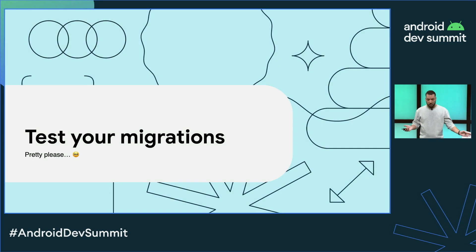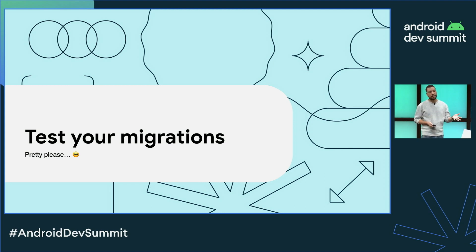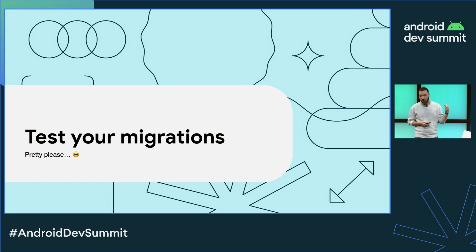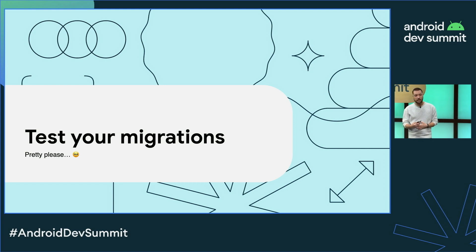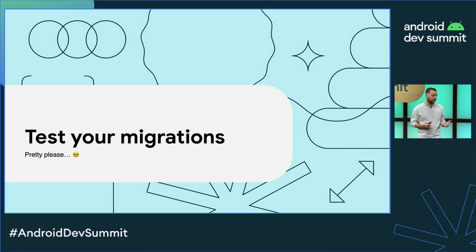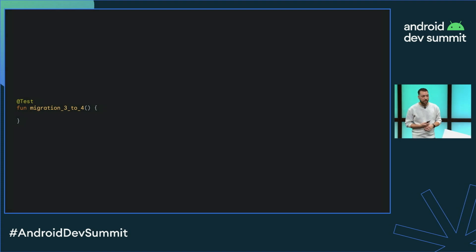Migration bugs are not very common, which means it's an area often overlooked during testing. But it's really important to test your migrations because they can lead to some really bad bugs — especially crash loops where the app is trying to update the database and failing, and the user ends up reinstalling the app and losing their data. The good news is that Room does offer APIs for testing migrations, including auto migrations.